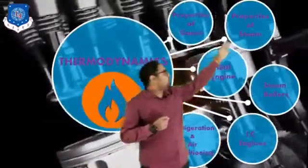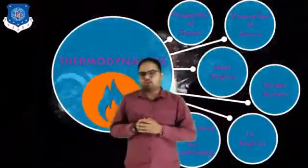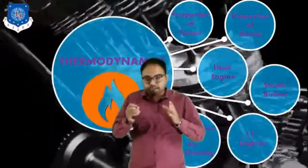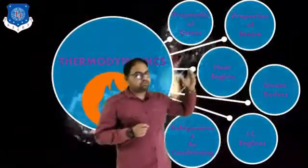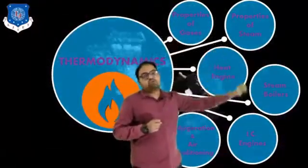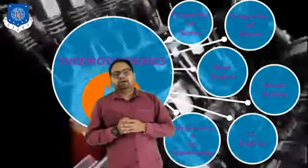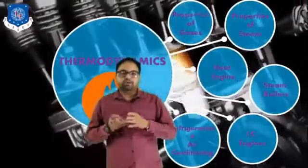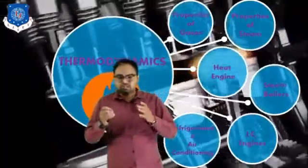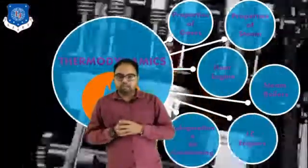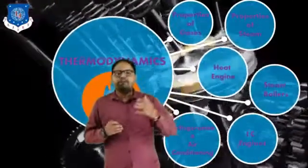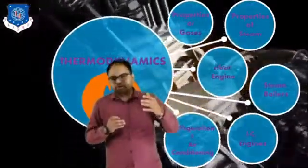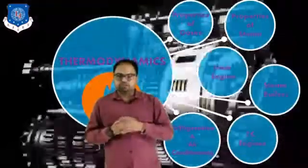The next one is properties of steam. In properties of steam, we first discuss the main difference between gas and steam. After that, we discuss how steam formation takes place and how the quality of steam is measured. Steam can be of three types: wet steam, dry steam, and superheated steam. According to its application, various types of steam are used in industries.